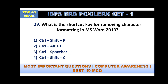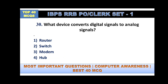What is the shortcut key for removing character formatting in MS Word 2013? The options are Ctrl+C+F, Alt+F, Spacebar, or Ctrl+Spacebar. The answer is Ctrl+Spacebar.